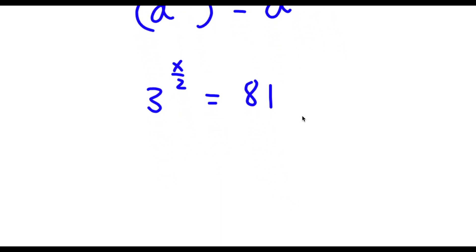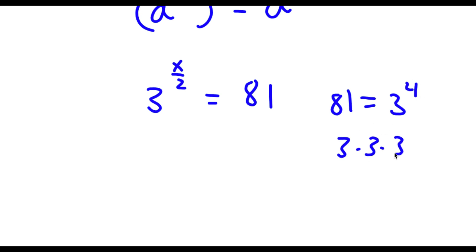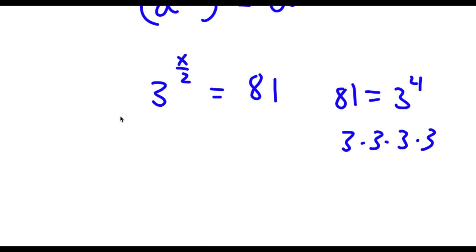Now 81 is the same thing as 3 to the power of 4, because 3 to the power of 4 is 3 times 3 times 3 times 3: 3 times 3 is 9, 9 times 3 is 27, and 27 times 3 is 81. So I'm going to replace 81 with 3 to the power of 4. So now I have 3 to the power of x over 2 is equal to 3 to the power of 4.